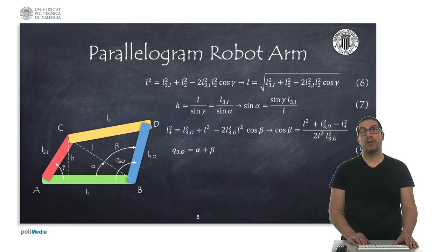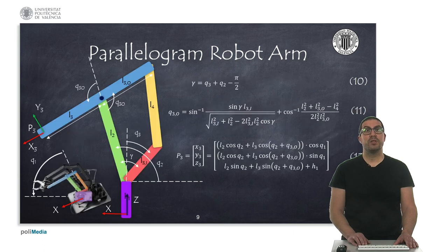Once alpha and beta are known, we can compute the output angle Q3O, which represents the angle of the third link of the robot as if we had a conventional serial manipulator.